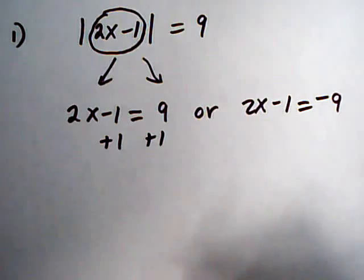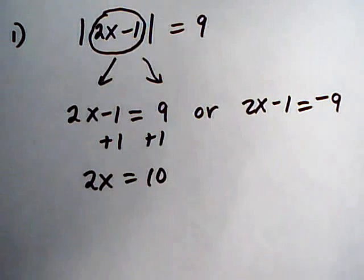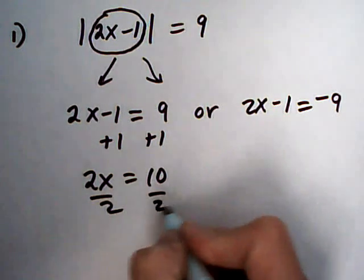First one, we add one to both sides. 2x equals 10. Divide by 2 and we get x is 5.